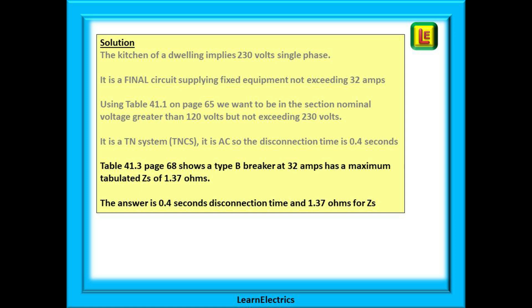The next part of the answer is found on page 68 in table 41.3 because it is a BS EN 60898 circuit breaker. It is a type B breaker 32 amps and below the 32 is the answer 1.37 ohms. So our complete answer is 0.4 seconds disconnection time and 1.37 ohms for ZS.